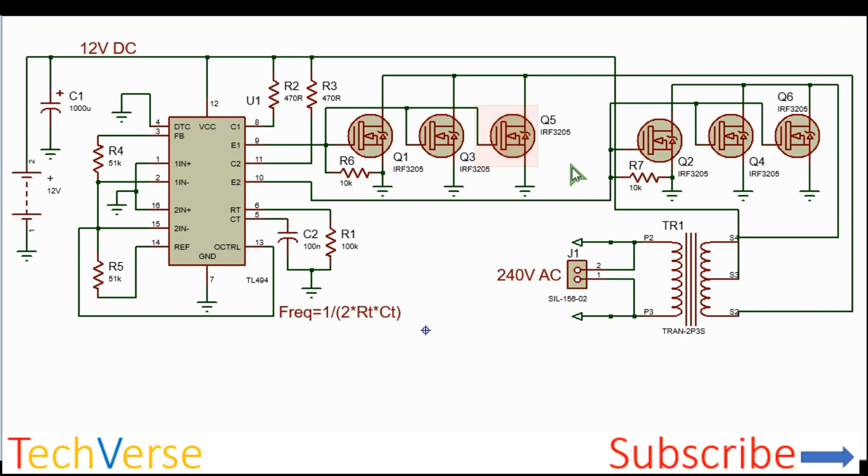And the power MOSFETs are the IRF3205. They are very good reliable MOSFETs which can handle 98 amperes each MOSFET. So if you parallel three of them, you can easily handle more than 280 amperes. And if you multiply that by 12 volts, you can easily get 3000 watts output.